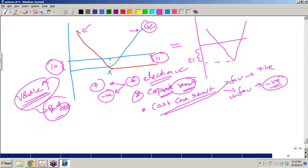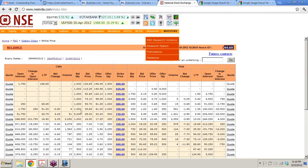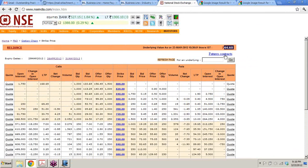So combination is of a call and a put. You can think of this. Let's say we want to create this on Reliance. Reliance current price is...